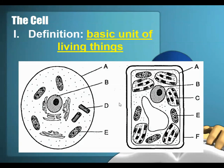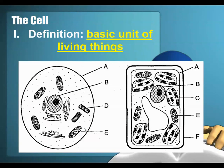Structure D is something that's only found in animal cells, and those are centrioles. Those are going to help pull chromosomes apart during cell division. Structure E is found in both cells — that's the mitochondria, where cellular respiration occurs. Structure F is only in plant cells; that happens to be the cell wall.